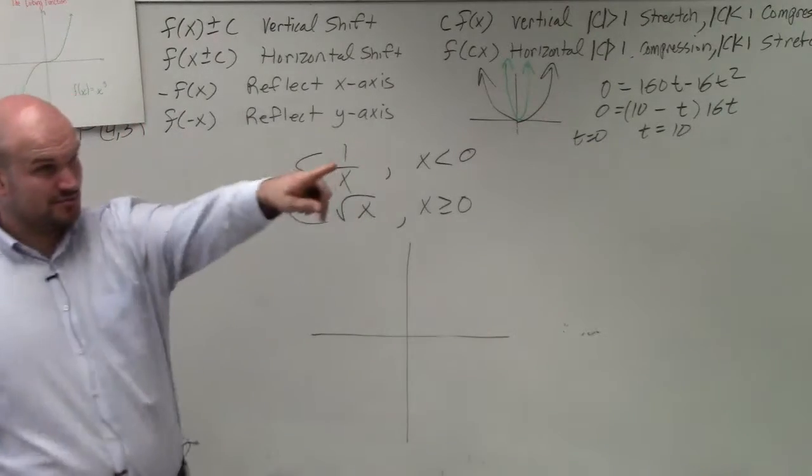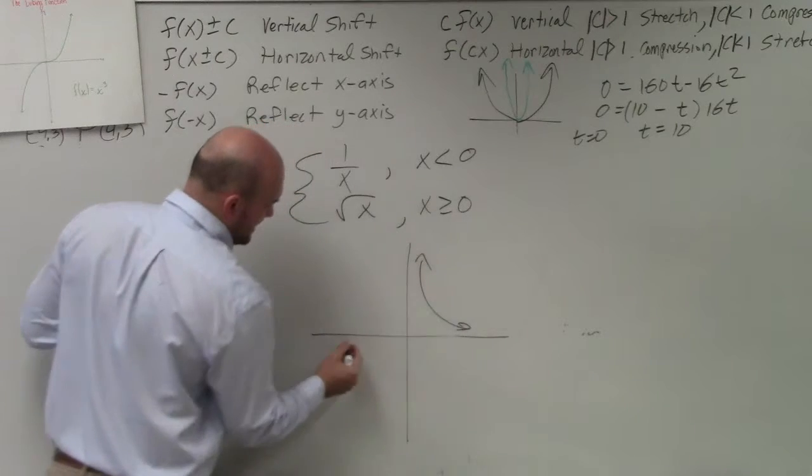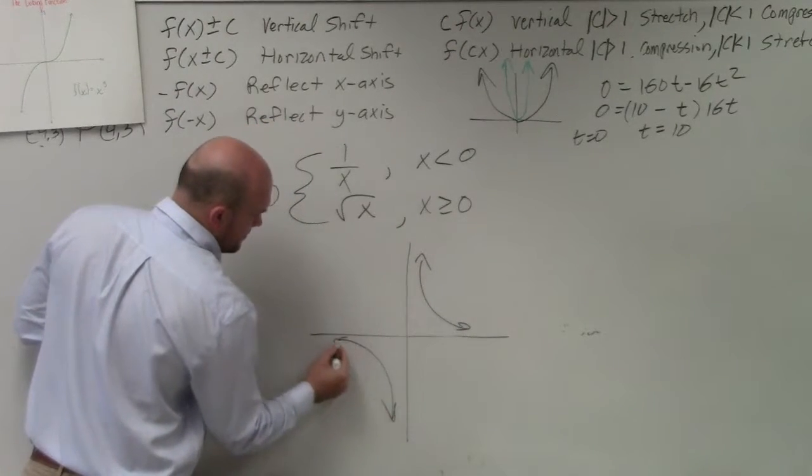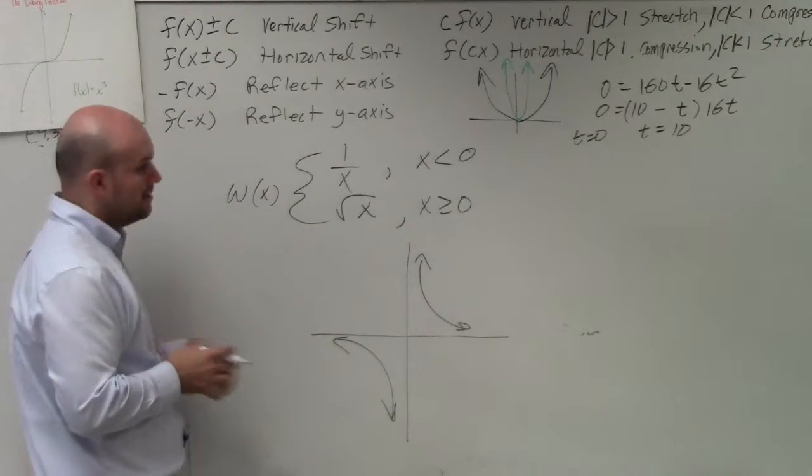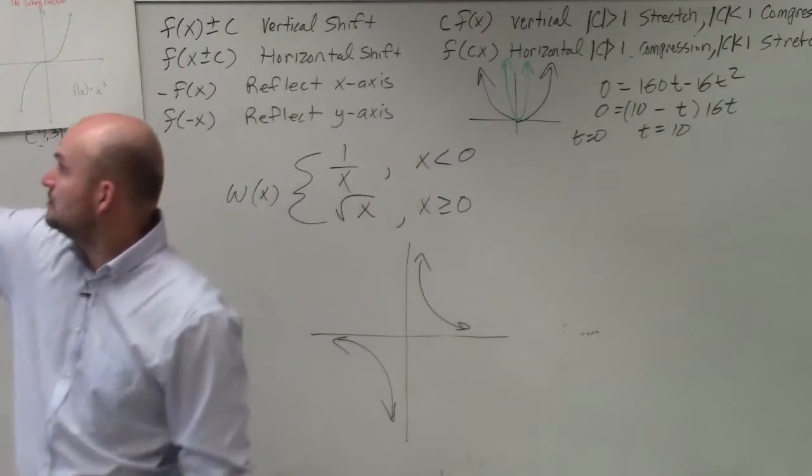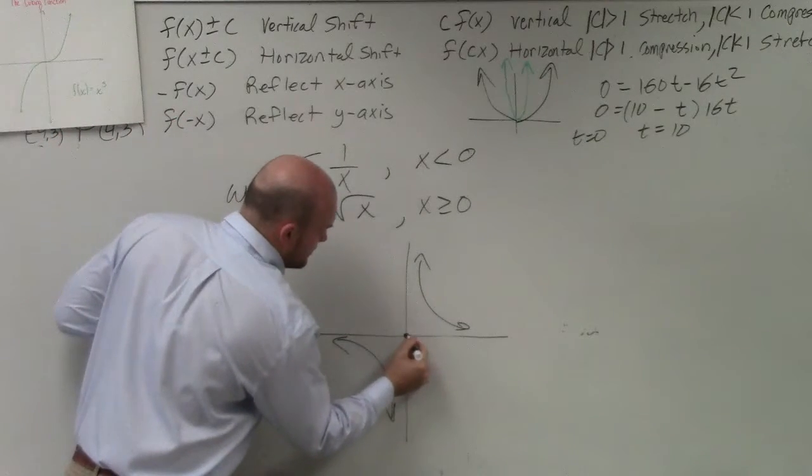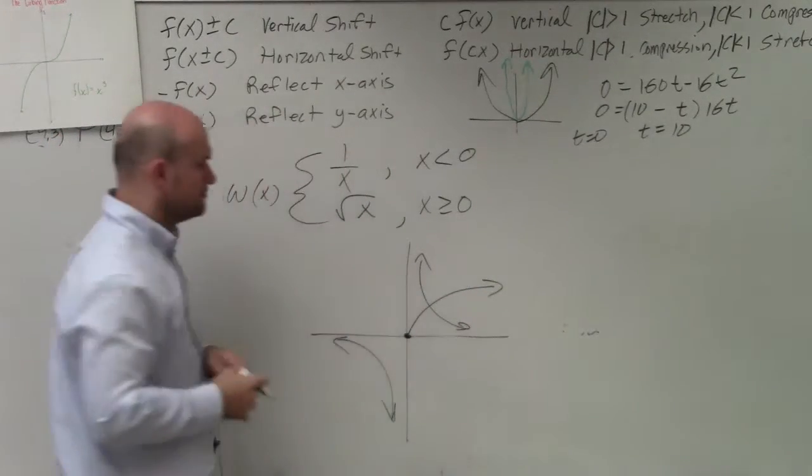1 over x, reciprocal function, it's over there. For all values of x, looks like this. Correct? The square root function for all values of x, right over there, so that looks like this. Right?